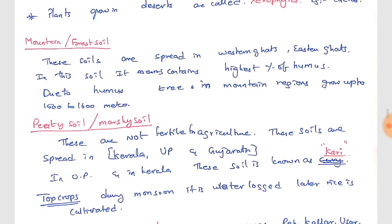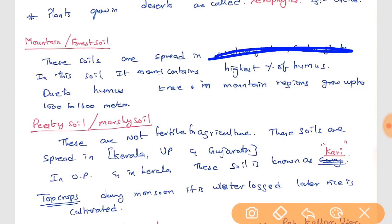Mountain or forest soils are found in the Himalayas, Sikkim, Arunachal Pradesh, and parts of the Western Ghats. Due to humus — formed when trees shed leaves that dry up and fall on the floor, decomposing into humus — the fertility of the soil increases. This fertile soil can support trees growing up to 100 to 150 meters in height.